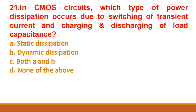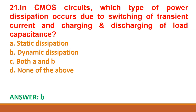Next question: in CMOS circuits, which type of power dissipation occurs due to switching of transient current and charging and discharging of load capacitance? This is mainly due to dynamic power dissipation. So option B is the right answer.